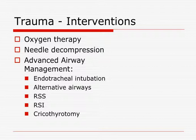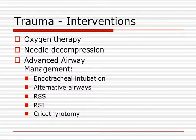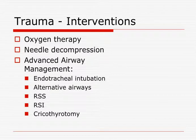Trauma interventions include oxygen therapy, needle decompression, advanced airway management, early endotracheal intubation, alternative airways such as the King Airway, and rapid sequence sedation — which we can do in this area. Rapid sequence intubation — where you paralyze the patient — we cannot do here. Rapid sequence sedation puts them to sleep but does not necessarily paralyze them, whereas RSI involves paralysis. As a very last resort: cricothyroidotomy, needle cric, or the QuickTrach — that's the absolute last thing you want to use.